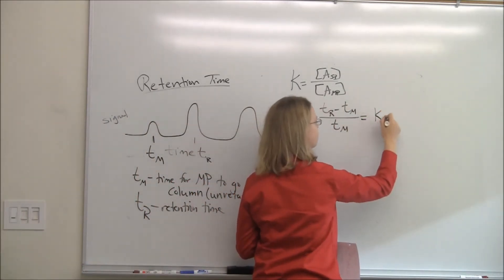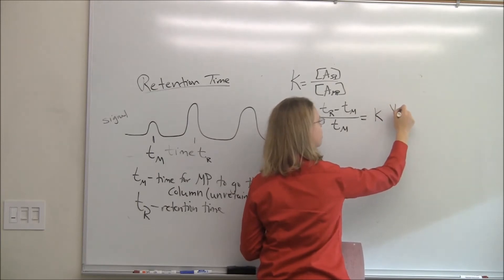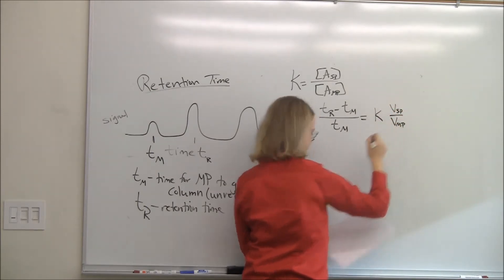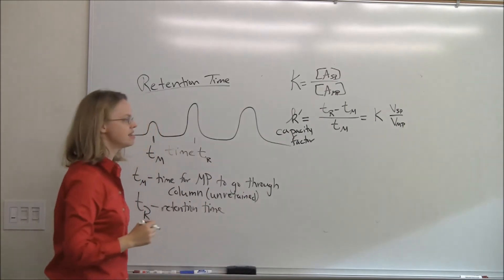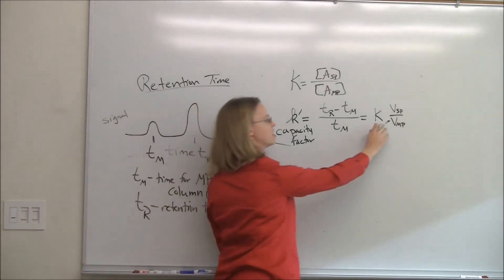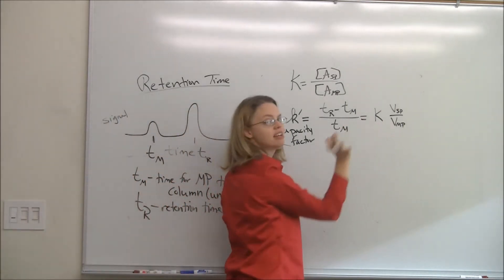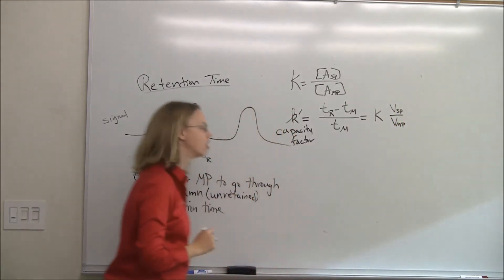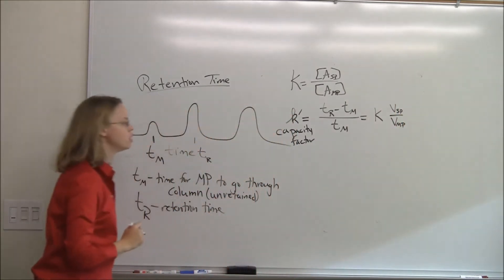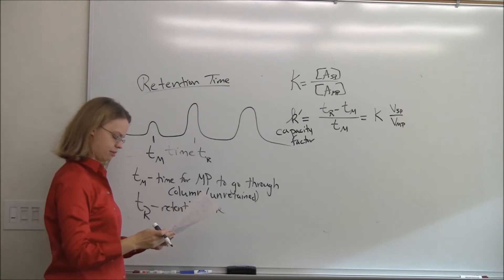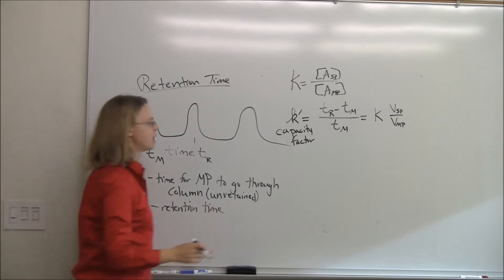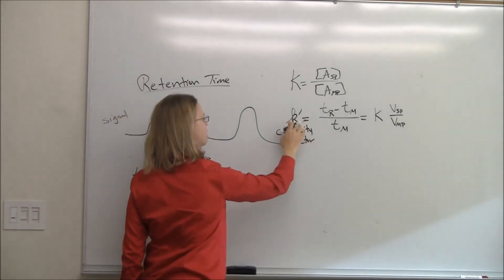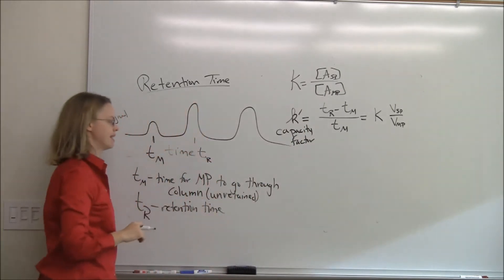K-prime is related to big K because it equals big K times the volume of the stationary phase over the volume of the mobile phase. You can see why nobody really likes this definition — it's useful, but who knows what those volumes really are. But it allows us to relate retention time back to the equilibrium constant K.